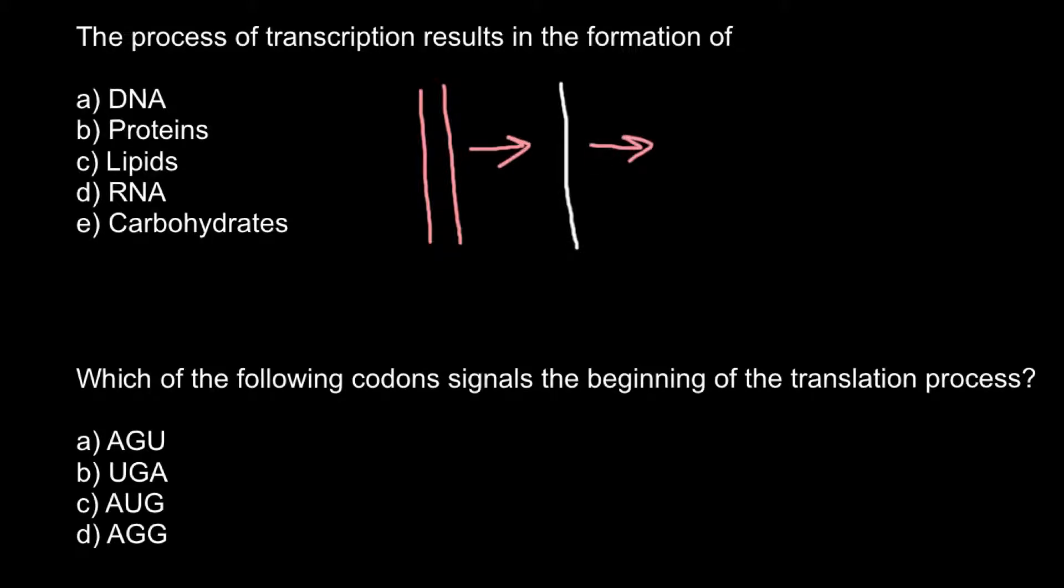make protein. This sequence would be used to make protein. This stage number one we call transcription, and stage number two we call translation.